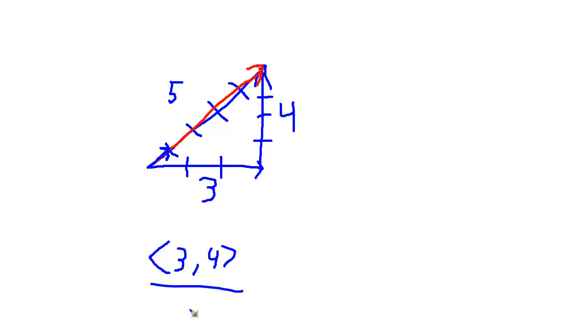so this divided by five will give me three over five for the first component. And the second component will be four over five.